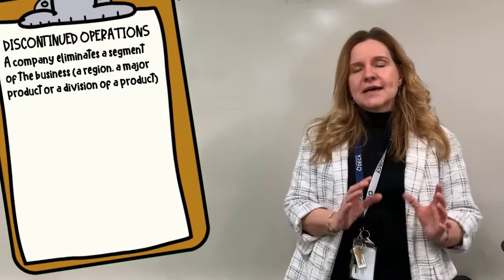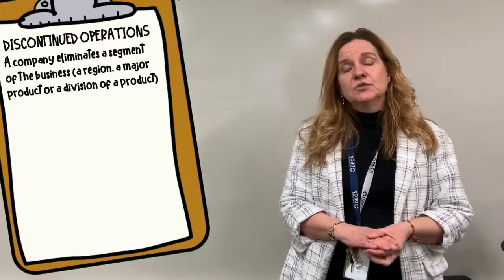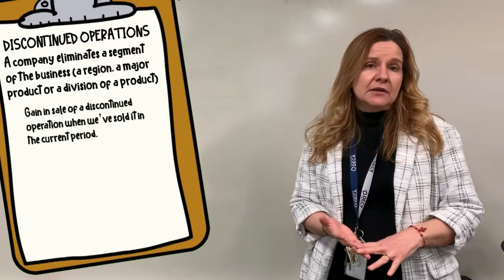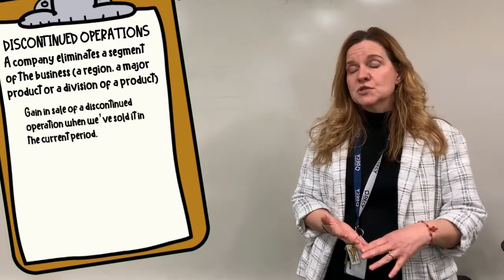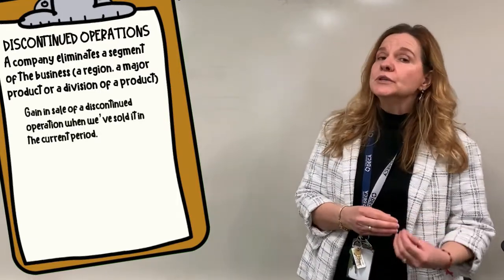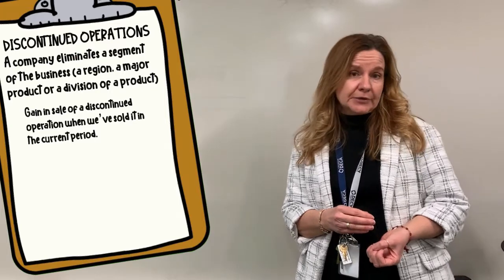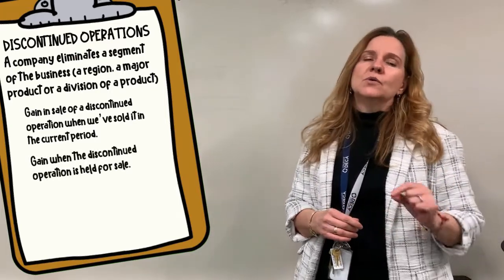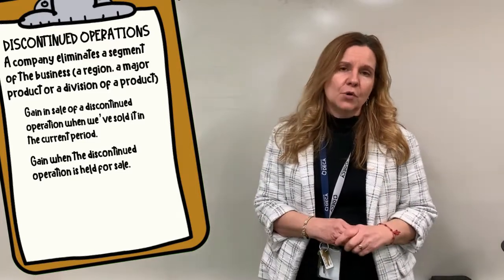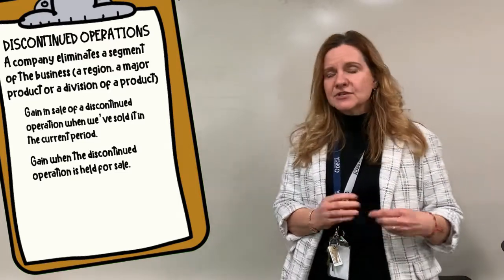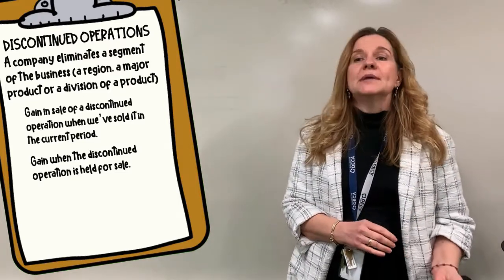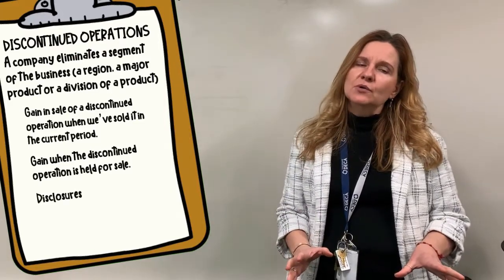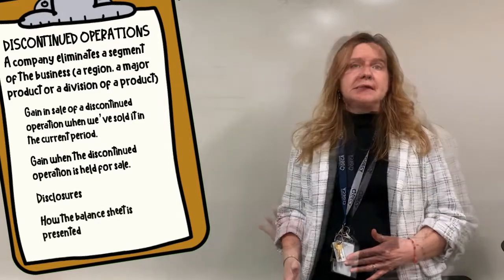So that's what we're focusing on: discontinued operations. We're going to look at the gain on sale of a discontinued operation when it's sold in the current accounting period. Then we'll look at a gain when it's held for sale — meaning we've determined we're going to sell it but haven't sold it yet. At the end, we'll look at disclosures required and how the balance sheet is presented.